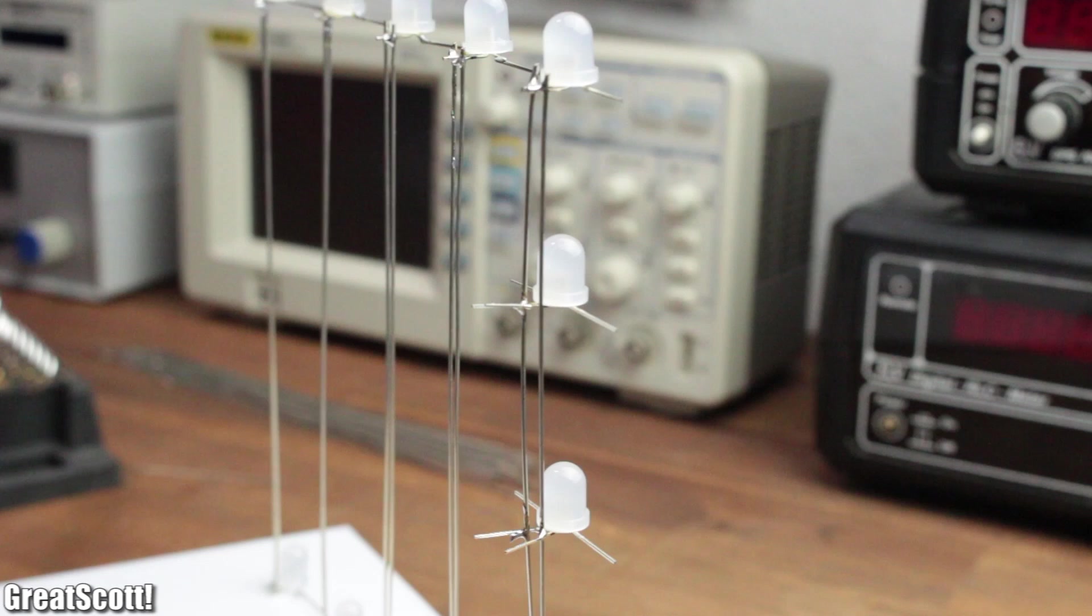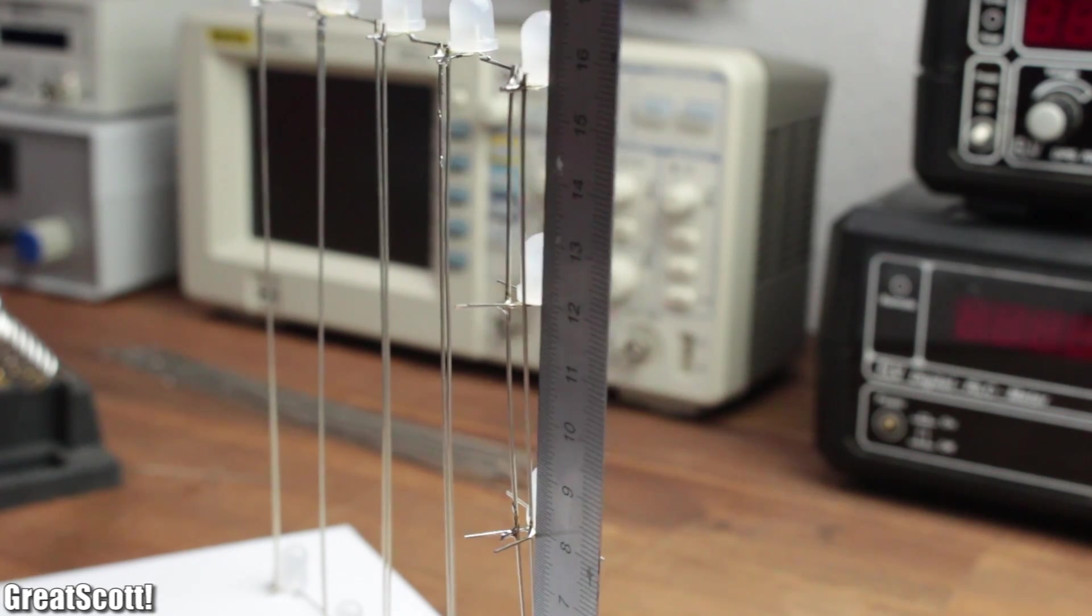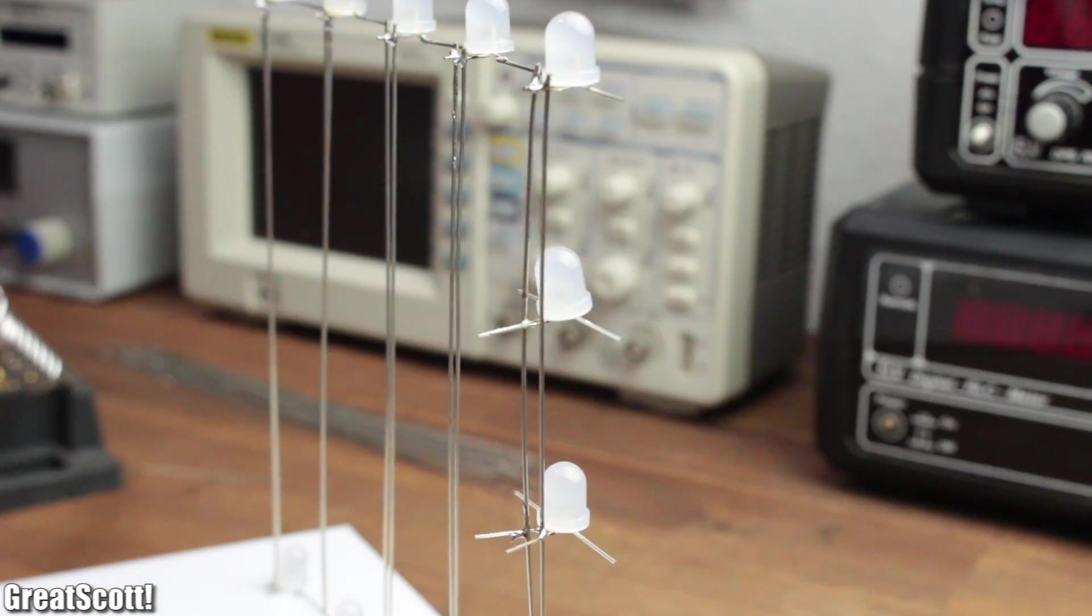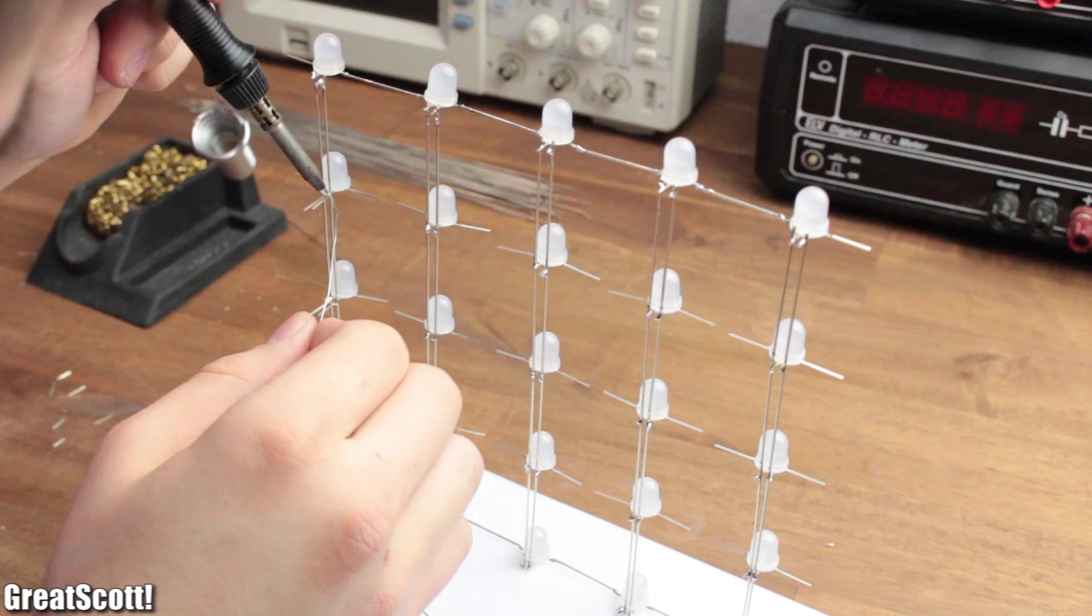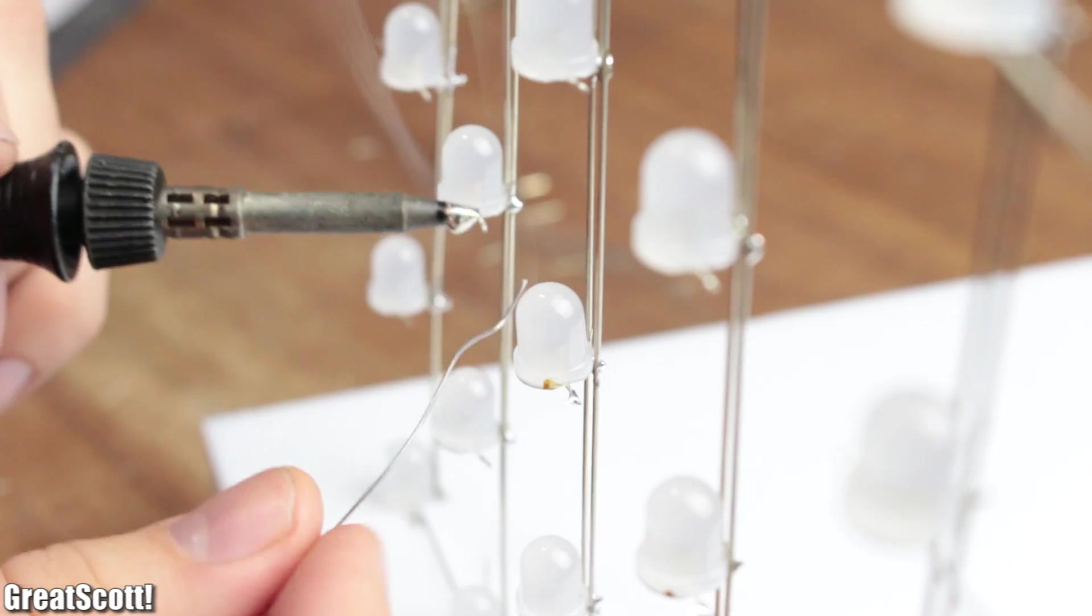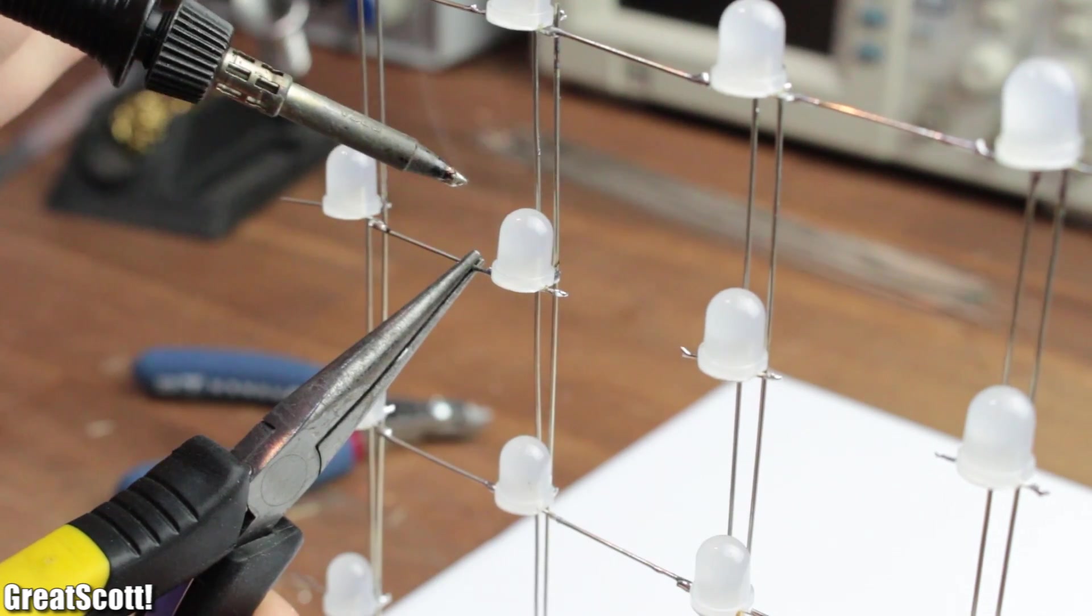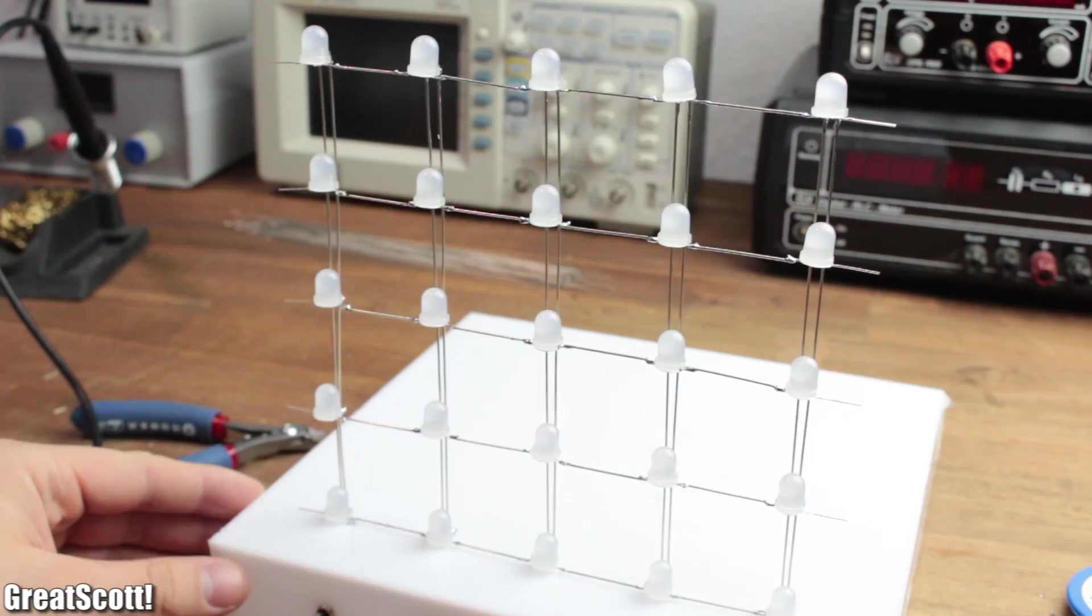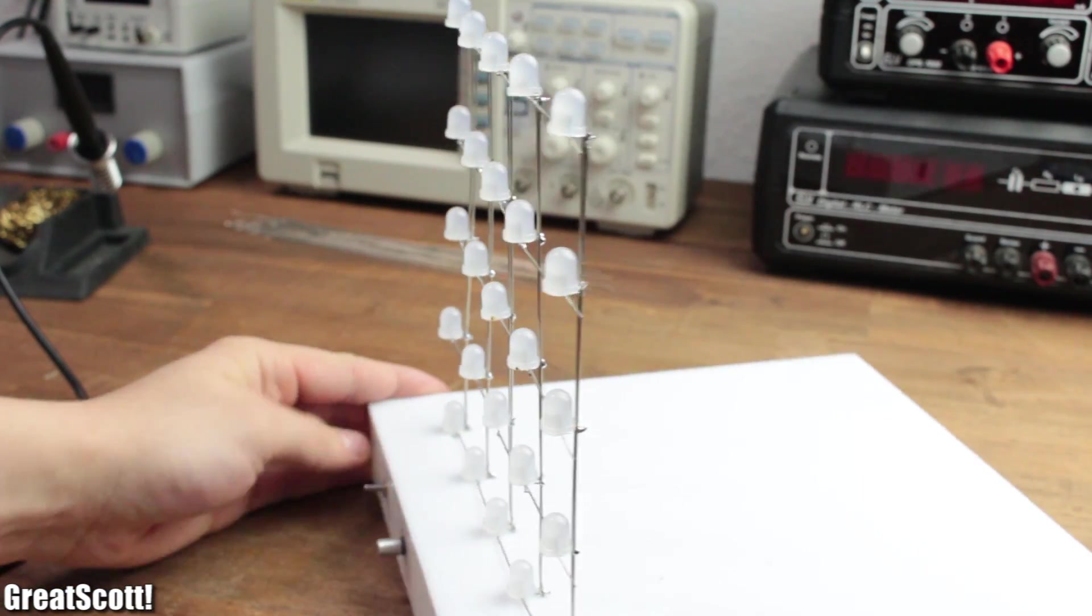Always make sure that the lower edge is in the correct position with the help of a ruler. Once that is done, we can again shorten the inner data pins, pre-tin those and solder a piece of wire between all of them. And the first of five segments is complete.